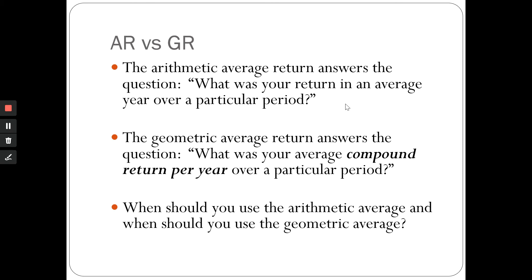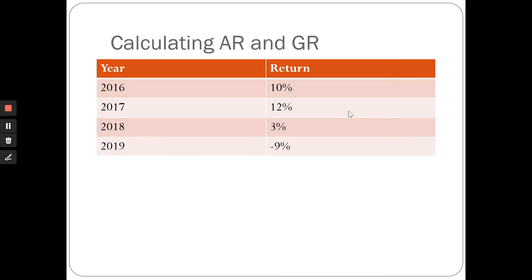We will answer that in two slides, but first we need to find how to compute them. Let's suppose you have invested in a stock — say it's Stock X — and the return of Stock X over the last four years is as follows: in 2016 it was 10%, in 2017 it was 12%, in 2018 it was 3%, and in 2019 the return was negative — you lost money on that stock by 9%.